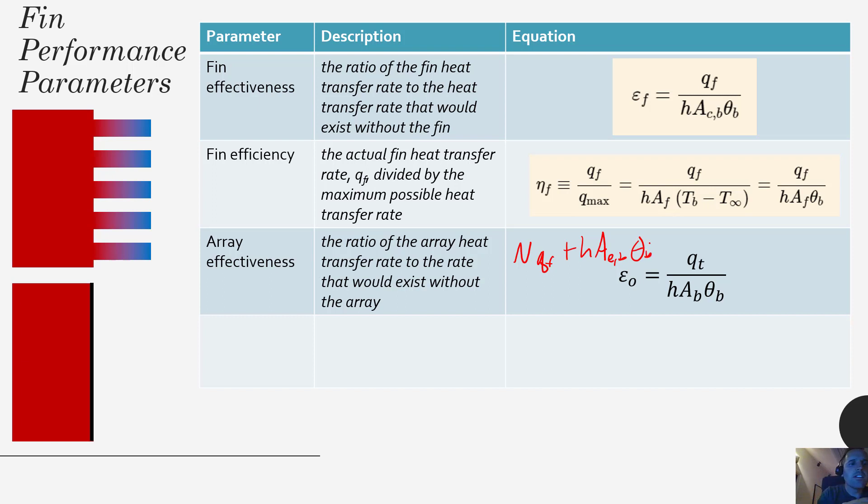but then you would also have h times the area of the exposed base times theta b. So basically what we're doing is we're taking all the heat transfer rate from here, but we're also considering the heat transfer rate from the area of the exposed base. So we'd get q total by considering all the heat that's dissipated over that entire array. Then this is relative to the area of the entire exposed base. So that's here represented by the black.